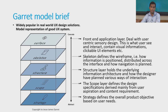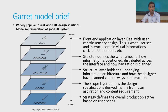Whether we deal with any website or any sort of machine interface, we always interact with the UI elements. As a user, we have a very limited understanding of the actual working principles and how the system has been developed. As we go from the top layer to the bottom in the Garrett model, things become a bit abstract. Beneath the surface layer is the skeleton layer. The skeleton layer defines the wireframe — how information is positioned and distributed across the interface and how navigation is planned.